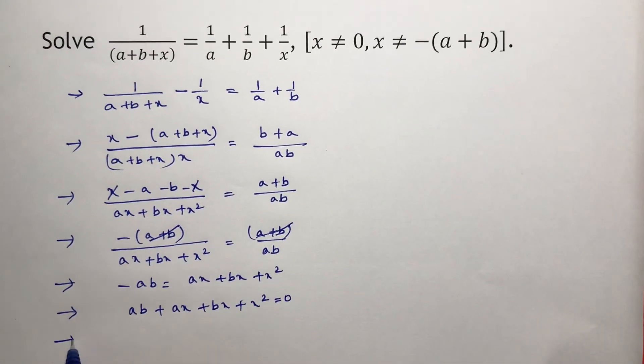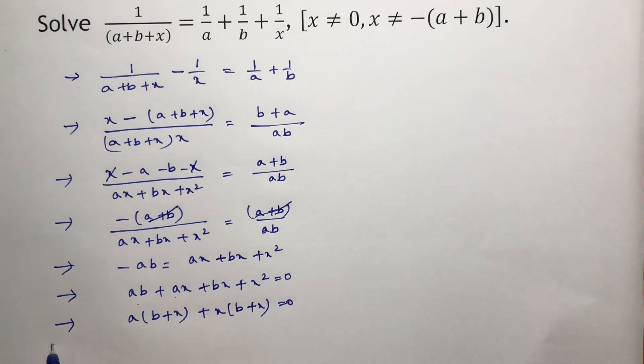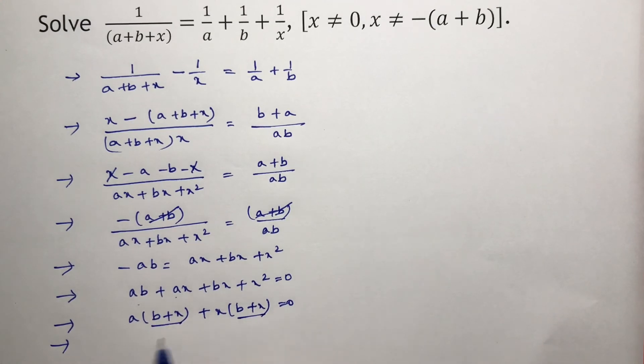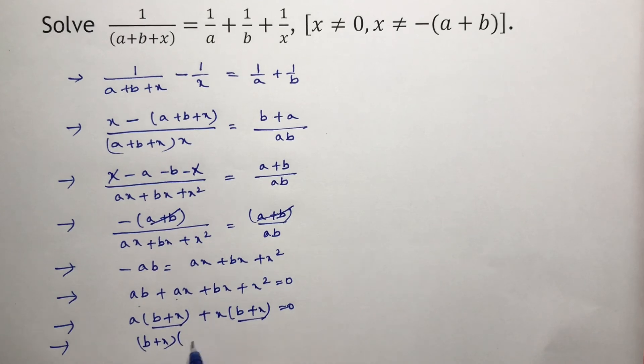In the first two terms, I can take a as common, so I will be left with b plus x. If I take x common, I will be left with b plus x. Now if I take b plus x common, I will be left with a plus x.